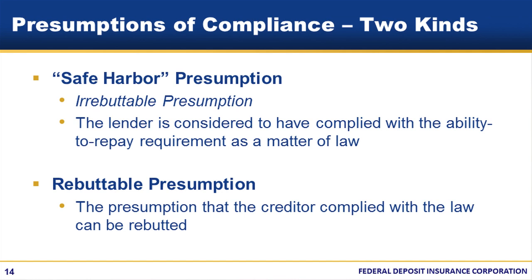A benefit you get from writing a QM is that it gives you a presumption of compliance. There are two kinds of presumptions. The safe harbor, or irrebuttable presumption, means that the lender is considered to have complied with the ability to repay requirement. For instance, in the event a consumer alleges that the creditor violated the ability to repay rule, a safe harbor QM is conclusively presumed, as a matter of law, to have been made in compliance with the rule. The rebuttable presumption QM is what it sounds like — while there is a presumption that the creditor complied, that presumption can be overcome.